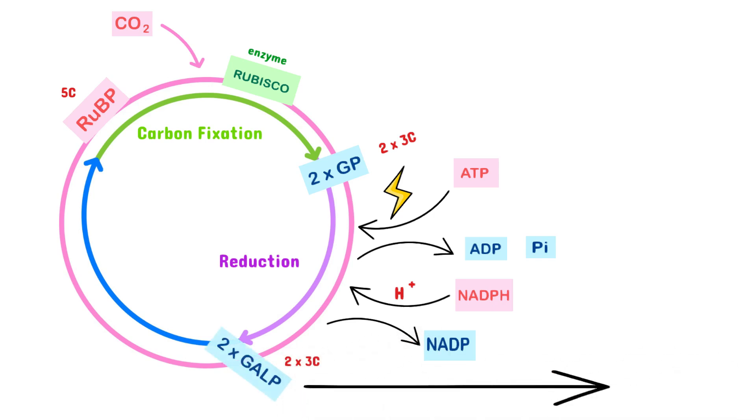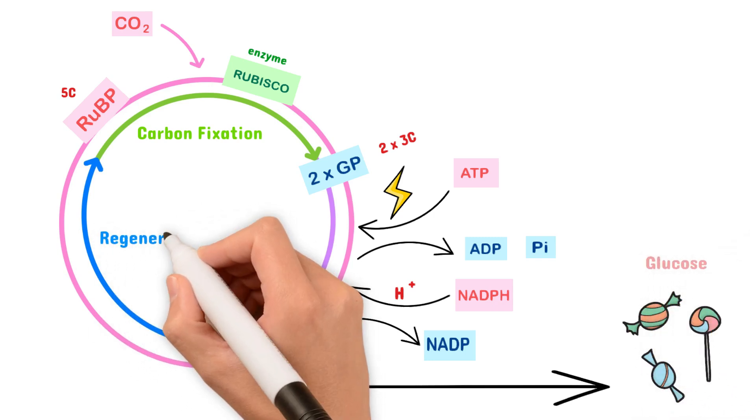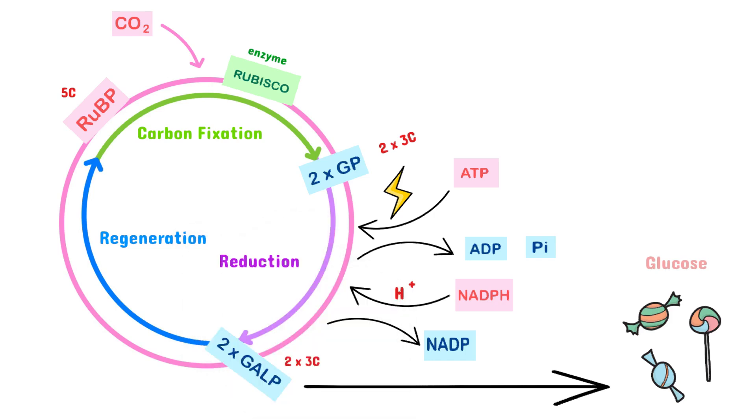Now, some of GALP goes on to become glucose, but much of it continues into the next stage, which is known as regeneration. In this stage, GALP undergoes a series of reactions and turns back into the original RUBP compound. This way, the reaction can happen over and over again.